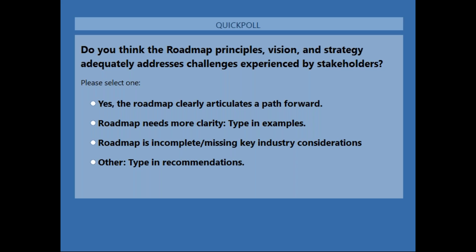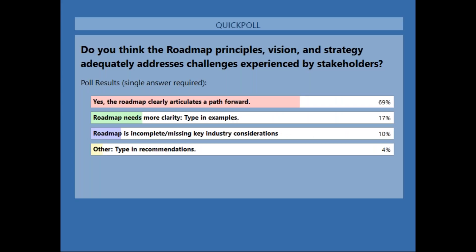Looking at the results, about 69% of you believe that the roadmap clearly articulates a path forward, which is good to hear. About 17% indicate that the roadmap needs more clarity. 10% of you indicate that the roadmap is incomplete or missing key considerations. And 4% have indicated other. We look forward to reviewing your comments and feeding that into some of the discussion for today.